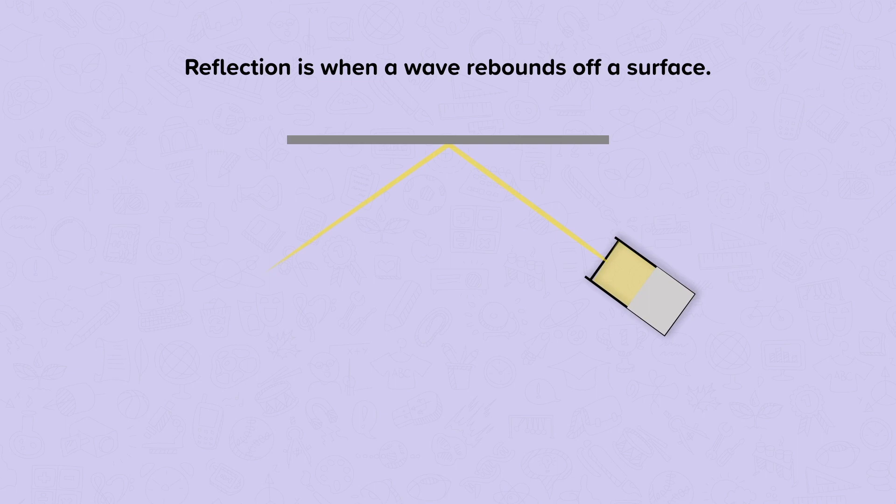Let's think about angles. We measure angles from an imaginary perpendicular line that comes out of the mirror where the light is incident. This line here, we call this the normal.